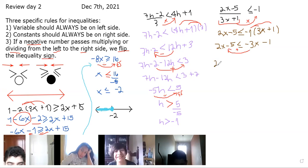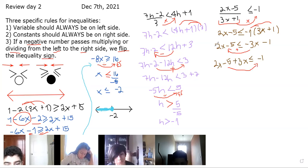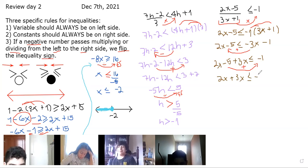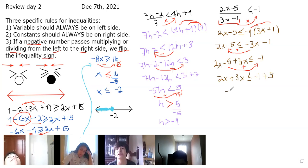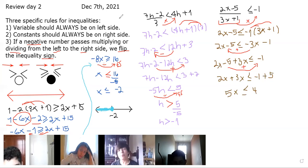There is nothing to simplify on either side, so we apply our specific rules. Variables go on the left — negative 3x moves to the left as positive 3x. Remember to copy what's already on that side: 2x minus 5 plus 3x. Constants go on the right — negative 5 moves to the right as positive 5. So we have 2x plus 3x less than or equal to negative 1 plus 5. Combining: 2x plus 3x is positive 5x, and negative 1 plus 5 is positive 4.